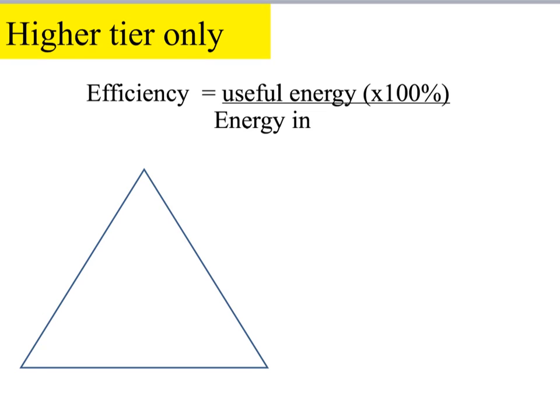If you're studying for the higher tier, you might need to calculate something other than the efficiency. You might need to calculate the useful energy or the energy in. You might want to pause this now and try and write the equation in a triangle yourself to test yourself before you watch me do it. Okay, so here we go. Remember, if something is above the line in the equation, then it has to go above the line in the triangle. That means we need to put the useful energy at the top. That leaves us with the efficiency and the energy in at the bottom.